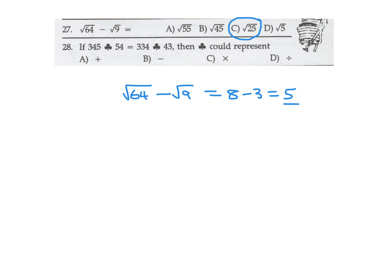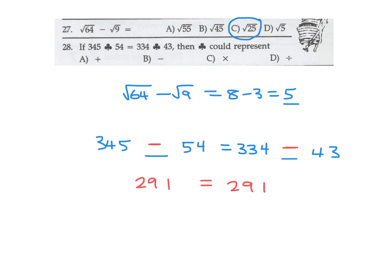If 345 symbol 54 equals 334 symbol 43, then symbol could represent what? Trying addition: 399 vs 377 — doesn't work. Trying subtraction: 345 minus 54 equals 291, and 334 minus 43 equals 291. The subtraction symbol works, so the answer is subtraction.